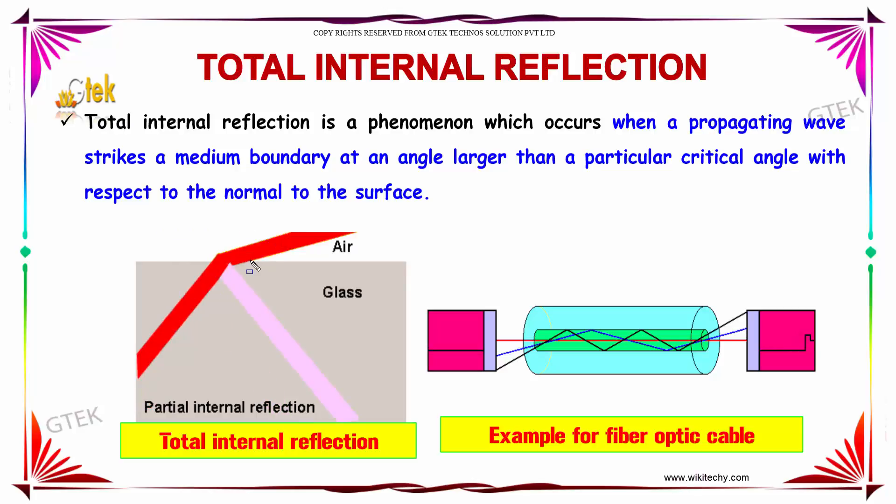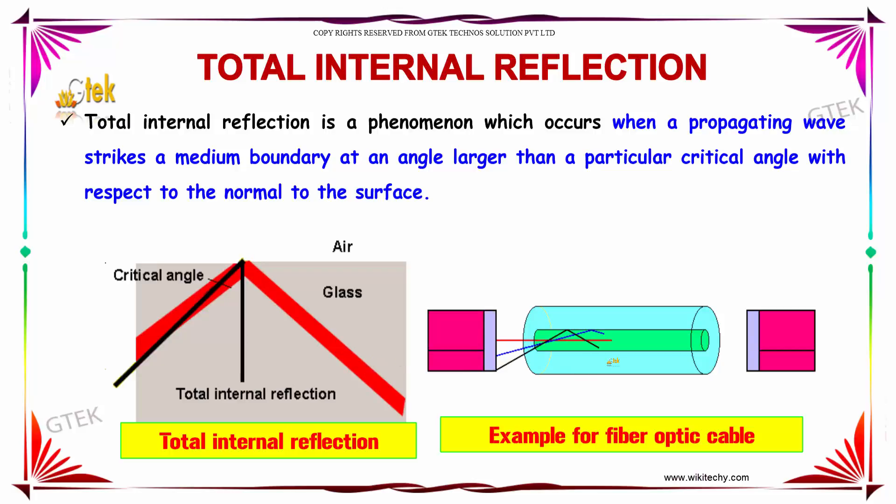Now the angle is changed, it is going out a little bit. The angle is changed again, it is not going. This is referred to as total internal reflection. This concept is used in fiber optic cables for transferring data or information.